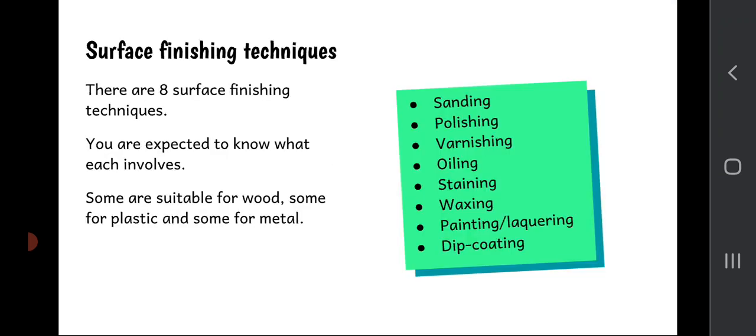In total there are eight surface finishing techniques, and at National 5 Design and Manufacture you're expected to know what each involves. Some are for wood, some are for plastic, and some are for metal. Quite often the ones suitable for metal are also suitable for plastic. Those techniques are sanding, polishing, varnishing, oiling, staining, waxing, painting or lacquering, and dip coating. Let's take a look at them.